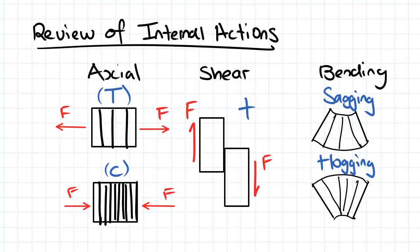So first I just wanted to quickly review internal actions which we talked about in the last topic. Axial forces come as either tension or compression. Tension is the elongation of our member and compression is the reduction in length of our member.